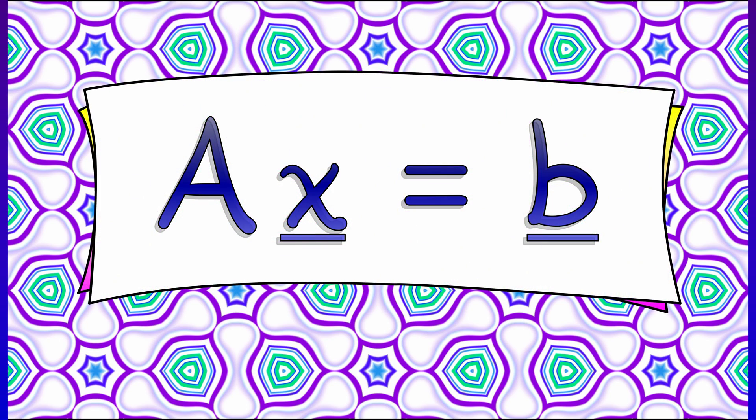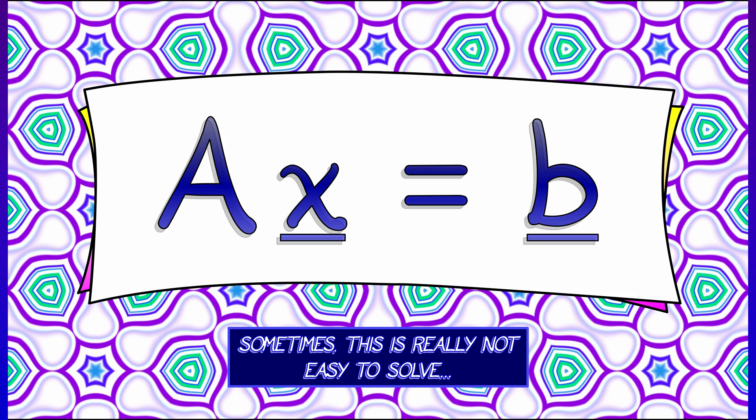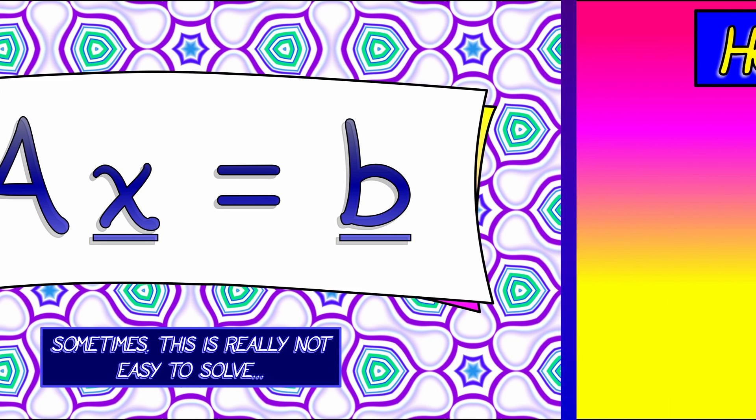So we've got a system of the form AX equals B, and we want to solve that, but we don't know how. Sometimes this is really not so easy to solve. So what are we going to do?